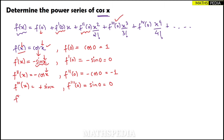For the fourth derivative, differentiate sin x, which gives cos x. The fourth derivative evaluated at 0 is cos(0) = 1.